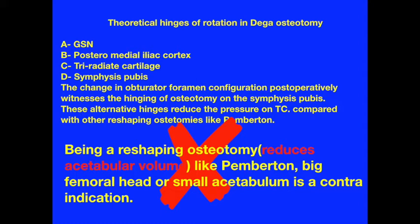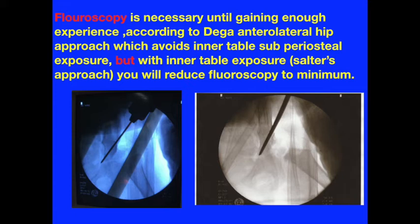Because it is a reshaping osteotomy, the contraindication is a large head with a small acetabulum. Fluoroscopy is necessary until gaining enough experience. According to Dega's lateral hip approach, which avoids inner table subperiosteal exposure, using Salter's approach with inner table exposure will reduce fluoroscopy to a minimum.